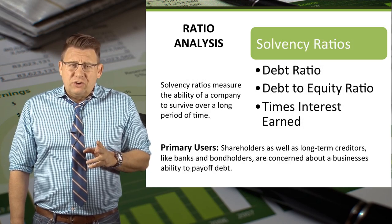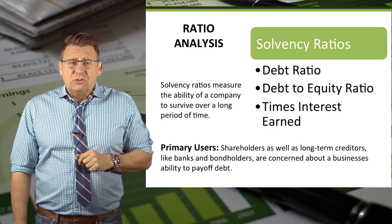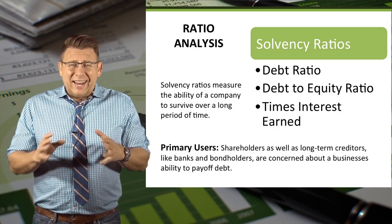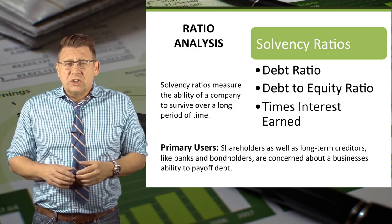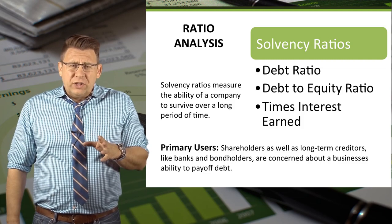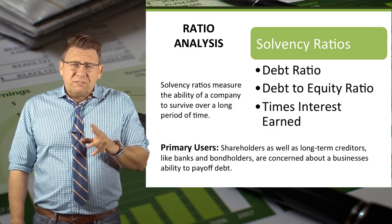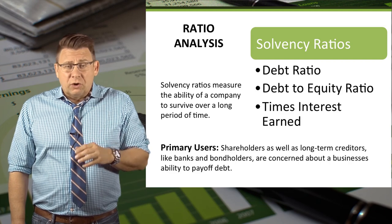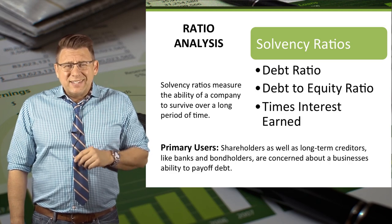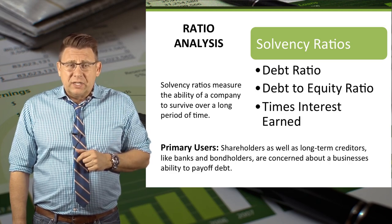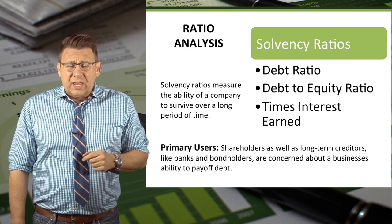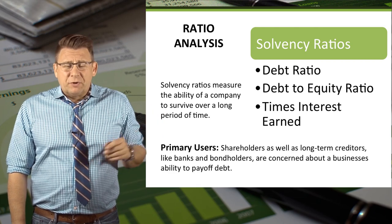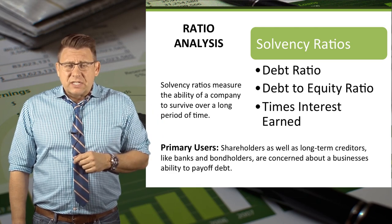Solvency ratios measure the ability of a company to survive over a long period of time by analyzing its long-term debt. The primary users of this financial data are shareholders and bondholders, as they are concerned about a company's ability to pay off long-term debt. You can see some of the common ratios listed on the slide.